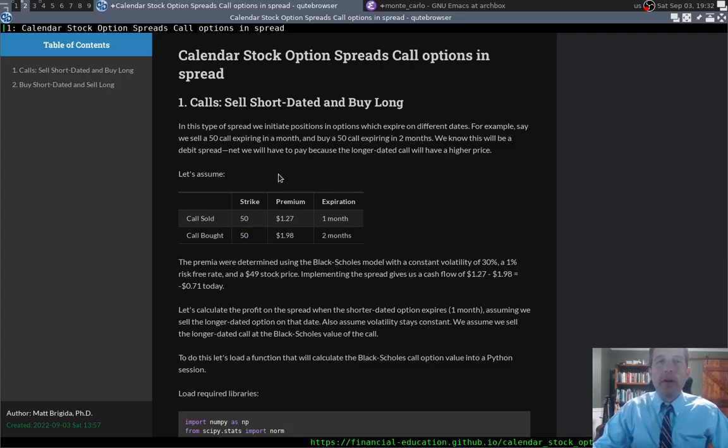The underlying, so here's going to be the option premium for the price of these two options. These premiums were calculated using the Black-Scholes model with an underlying stock of 49. We're putting this spread on when the underlying stock is at $49, a volatility of 30% and a risk-free rate of 1%. Because we are selling the short-dated option and buying the long-dated option, we know this is going to be a debit spread, meaning it's going to cost us money. It's going to cost us $0.71 today to put this on, and that's going to be our maximum loss.